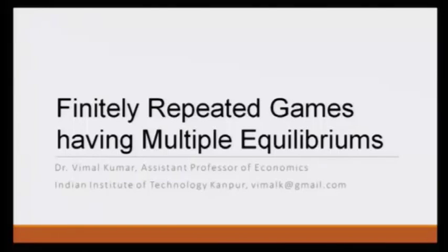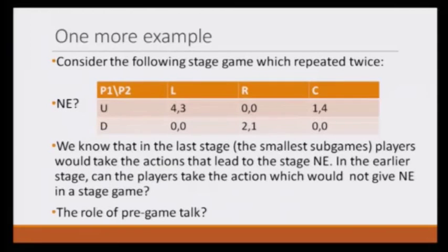In this sort of game, we will have in all the stage games more than one Nash equilibrium. So let us consider this particular example: we have two players, player 1 and player 2. Player 1 has two actions — up and down — and player 2 has three actions: left, right, and center.